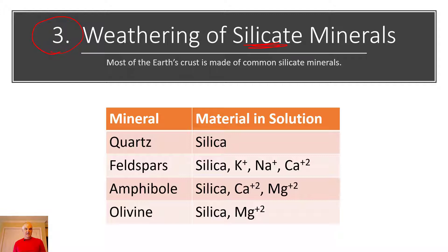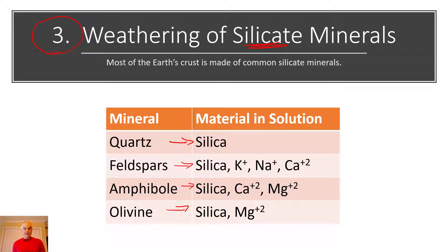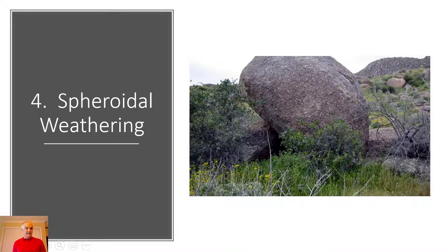Thirdly, let's talk about the weathering of silicate materials. Silicate is the most common of all materials — quartz is silica, then there are feldspars and amphiboles, which are also related to granite. We focus on silicates because most of the earth's surface is made of these materials. They break down into substances that are valuable and important for soil formation and ultimately for living things.